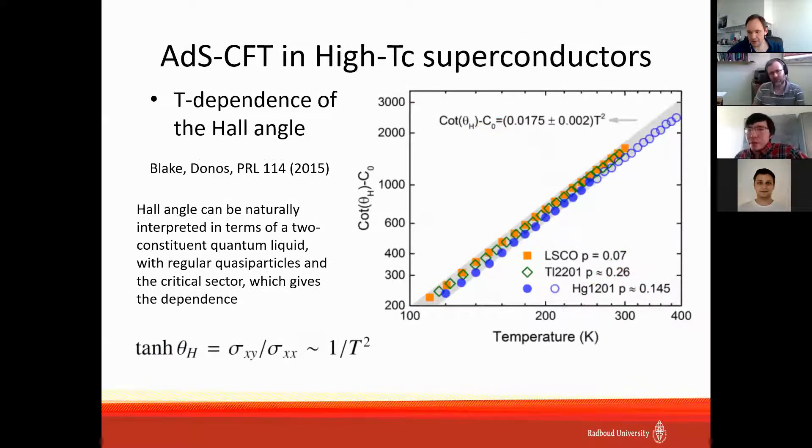Another interesting result is the temperature dependence of the Hall angle. The Hall angle is the temperature-dependent ratio of the Hall and DC conductivities. It behaves like this. In the work of Blake and Donos, it was shown that we can consider two kinds of liquid consisting of two fractions: one responsible for regular quasi particles and another completely within the critical sector. From this approach, we can obtain this kind of behavior of Hall angle.